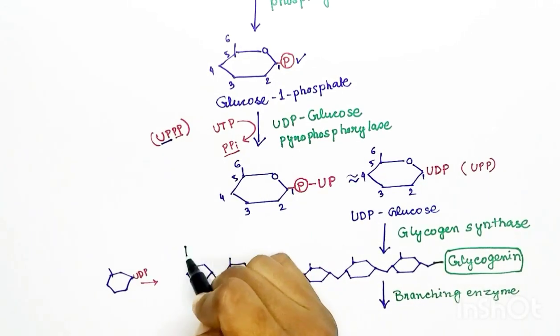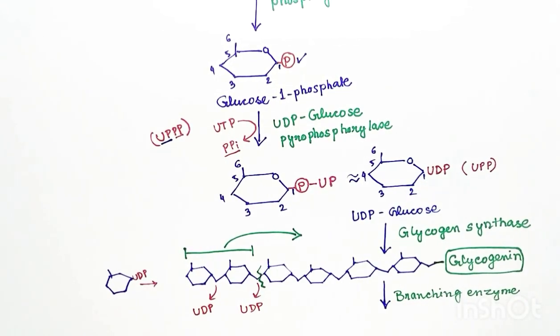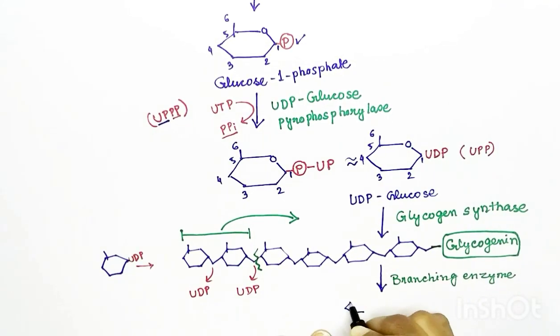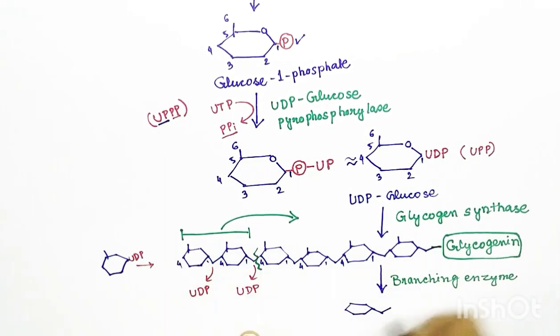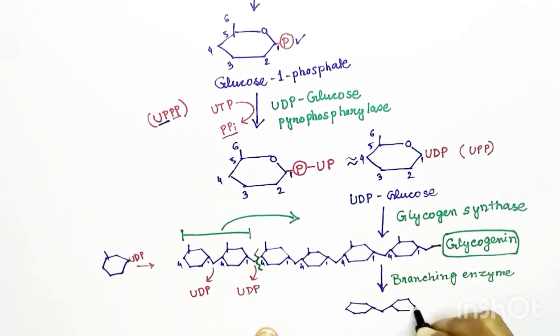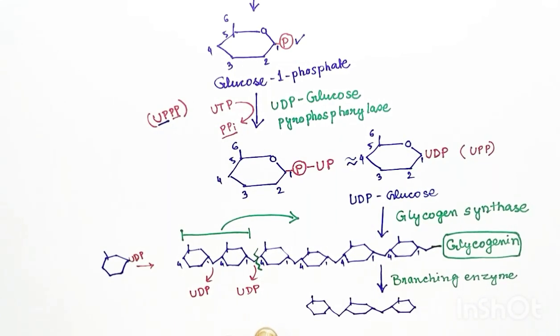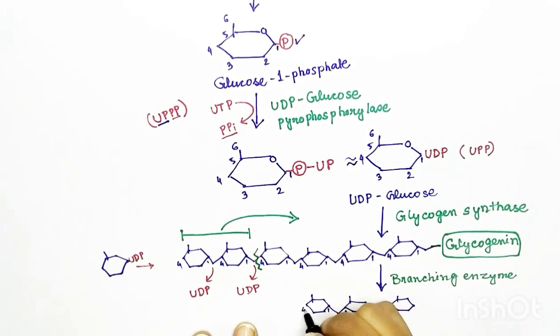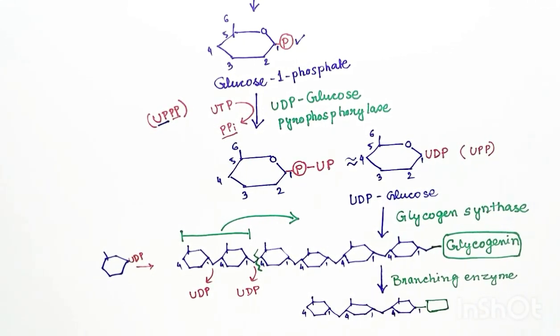This enzyme can cut off a linear chain of glycogen and add up to the sixth carbon of a glucose in that chain. In the linear chain, the bonding is between first carbon and the fourth carbon, and in the branching the bonding is between the sixth carbon and the first carbon of two glucose molecules.